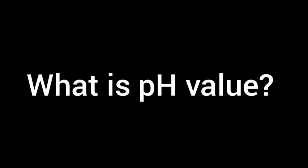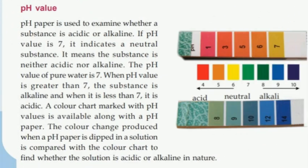What is pH value? pH paper is used to examine whether a substance is acidic or alkaline. If the pH value is 7, it indicates a neutral substance. The pH value of pure water is 7. When pH value is greater than 7 the substance is alkaline, and when it is less than 7 it is acidic.